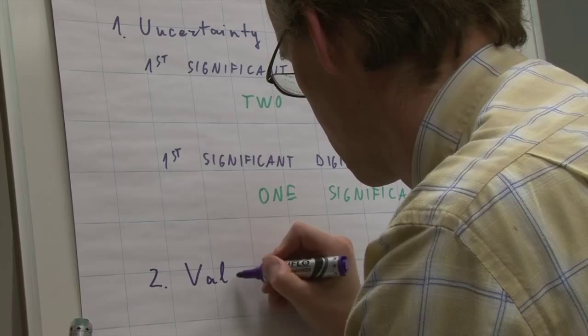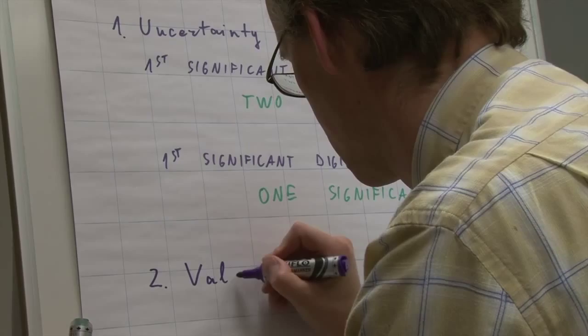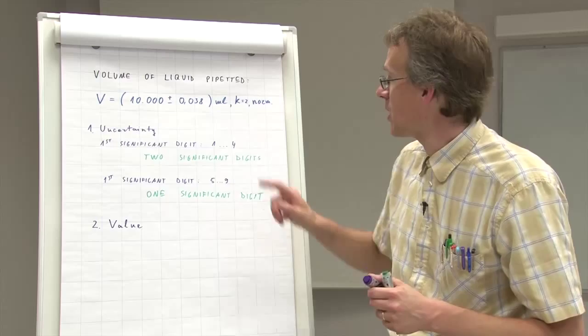The value. And here the rule is very simple. For the value, we give just as many decimals after the comma as the uncertainty has.